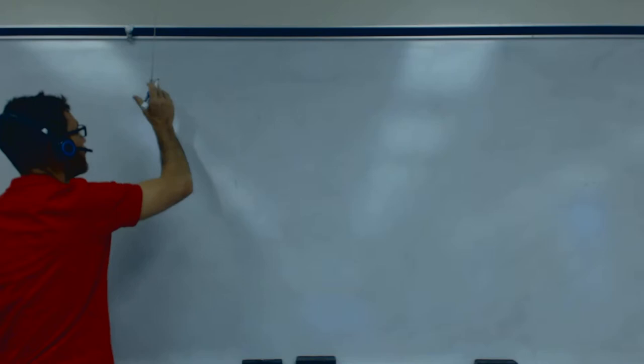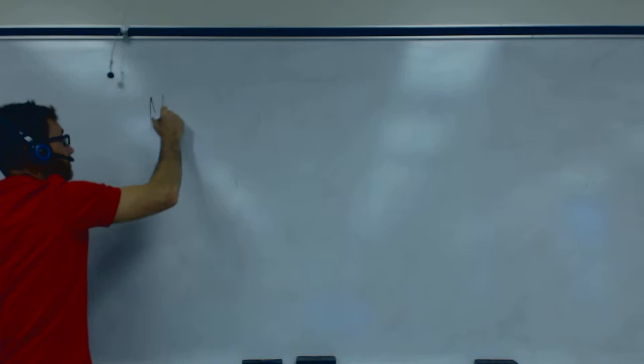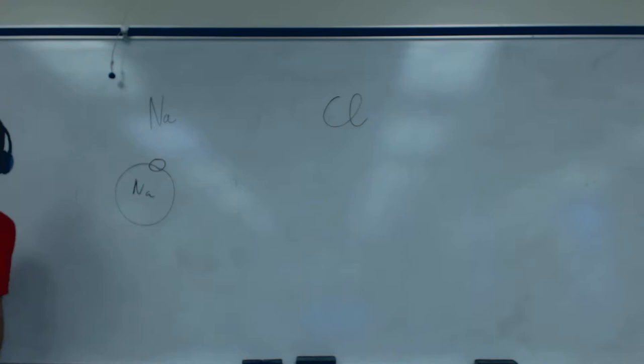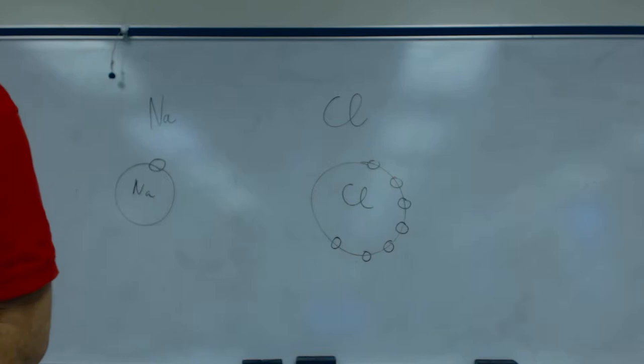Let's do the one that we know best, that is sodium and chlorine. Okay, sodium has one electron in its last level. And chlorine has seven electrons in its last level: one, two, three, four, five, six, seven. Sodium has how many protons? Eleven.